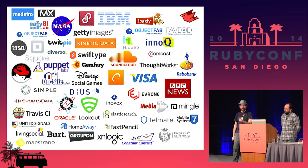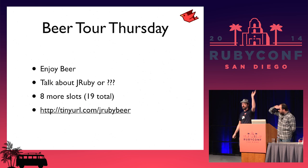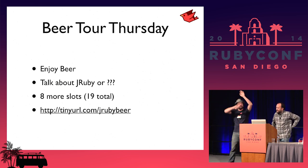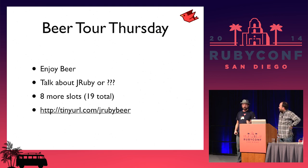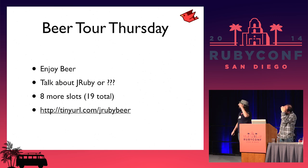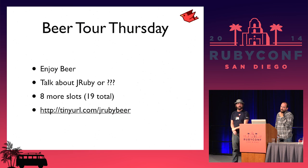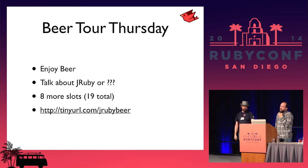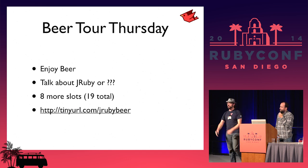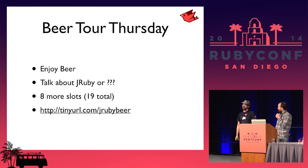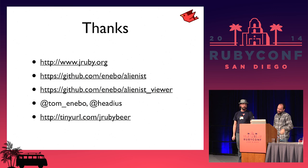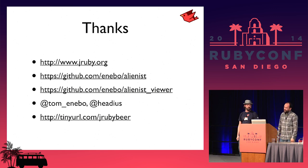One more thing: we've got a beer tour. If you're sticking around through Thursday, Hero — one of our contributors — has arranged a beer tour bus. We've got a few slots left and we're going to take about six hours to go around to a bunch of San Diego breweries. About eight slots left if you want to join the JRuby beer tour. That's about all we have — looks like we have about five minutes for questions. Thank you.